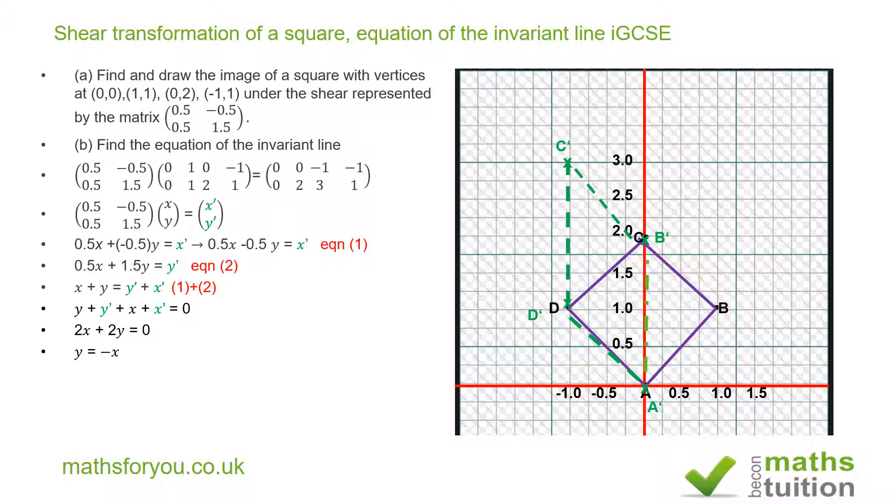Now to check, let's take a point on the invariant line: the point (-0.5, 0.5). If you do your multiplication, you should end up, if that point is on the invariant line, with (-0.5, 0.5) again. Check it out and see for yourself.